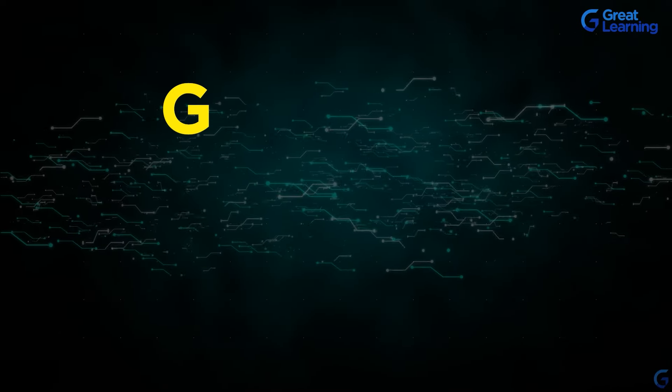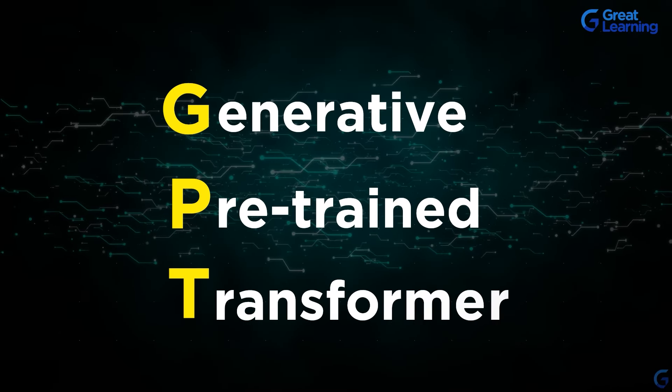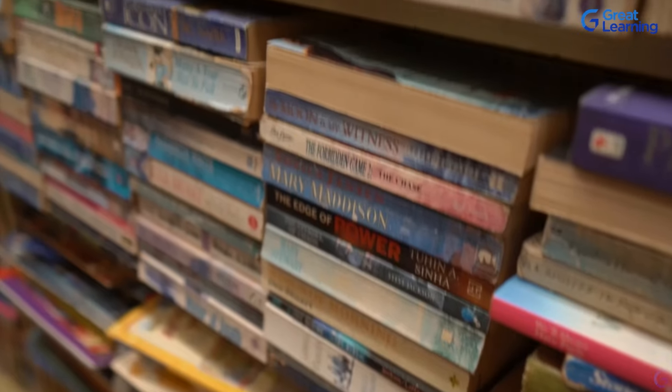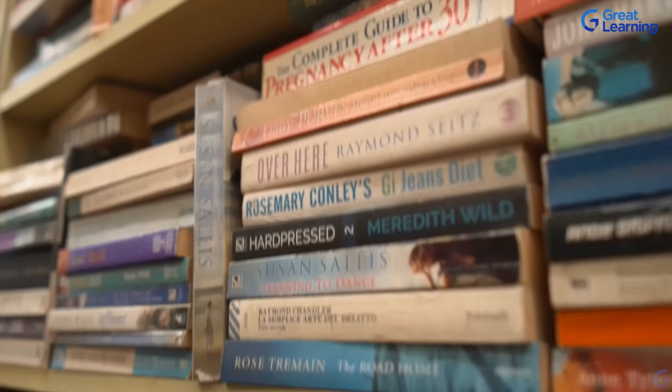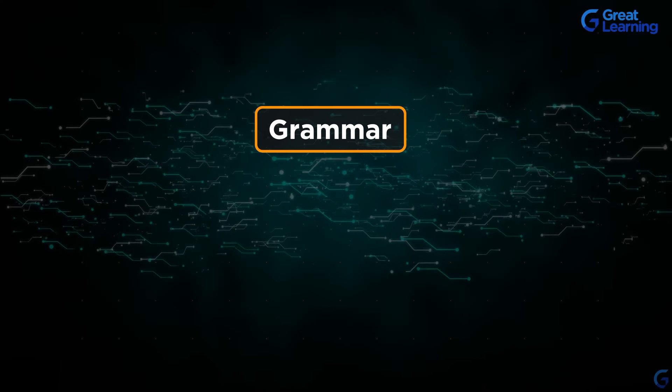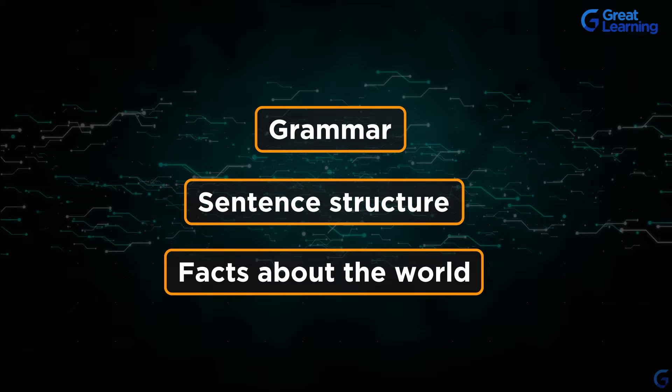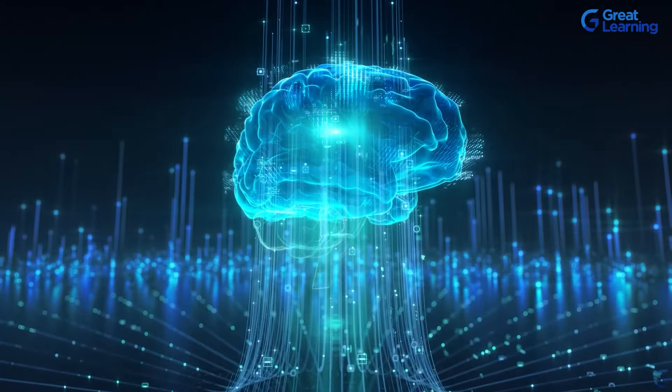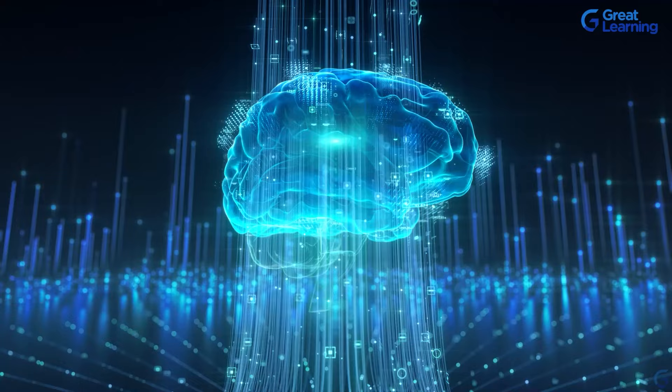First, let's break down GPT — Generative Pre-trained Transformer — in simple terms. Imagine teaching a friend to write stories. You would first give them tons of books to read. That's exactly what we do with GPT: we feed it a huge amount of text from books, articles, and websites. This is called pre-training. During pre-training, GPT learns the basics of language — grammar, sentence structure, and even some facts about the world. It's like the AI is soaking up all this knowledge.